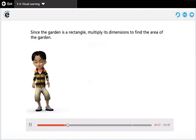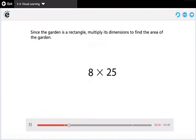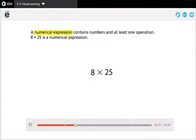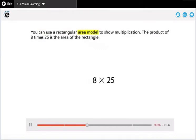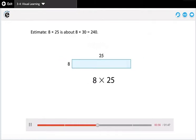Since the garden is a rectangle, multiply its dimensions to find the area of the garden. A numerical expression contains numbers and at least one operation. 8 times 25 is a numerical expression. You can use a rectangular area model to show multiplication. The product of 8 times 25 is the area of the rectangle.